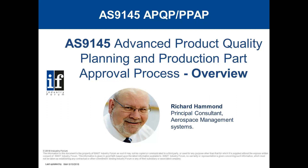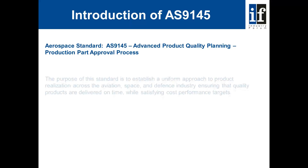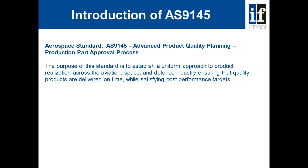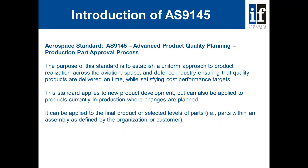It is expected that the standard will also be adopted by aerospace sector supply chains outside of aero engine supply. AS9145 Advanced Product Quality Planning and Production Part Approval Process. The purpose of this standard is to establish a uniform approach to product realisation across the aviation, space and defence industry, ensuring that quality products are delivered on time while satisfying cost performance targets. The standard applies to new product development and can also be applied to products currently in production where changes are planned. It can be applied to the final product or selected levels of parts, for example parts within an assembly, as defined by the organisation or customer.